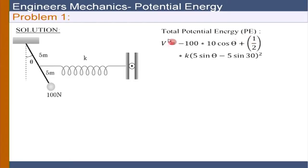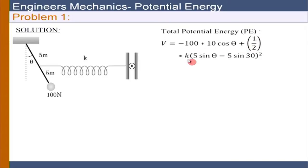The potential energy function is negative 100 times 10 cosine theta. Here, 10 cosine theta is the distance from the datum chosen at the hinge location, and the negative sign is because the weight W is below the datum line. Then we have the spring energy: half multiplied by K, where the stretching x equals 5 sin theta minus 5 sin 30 degrees.